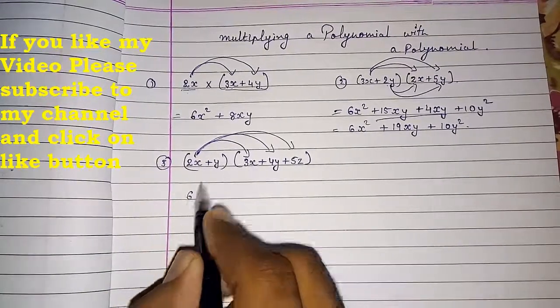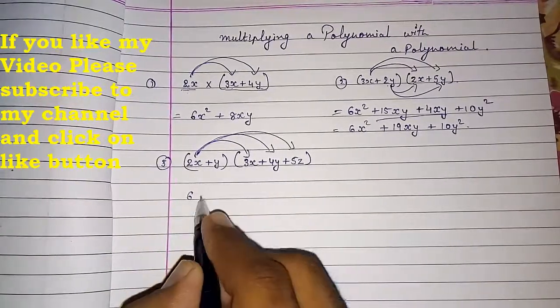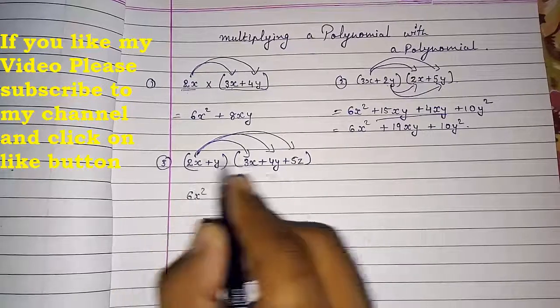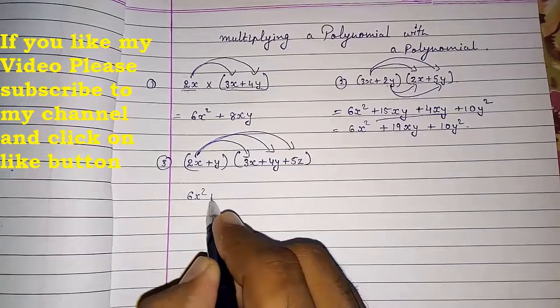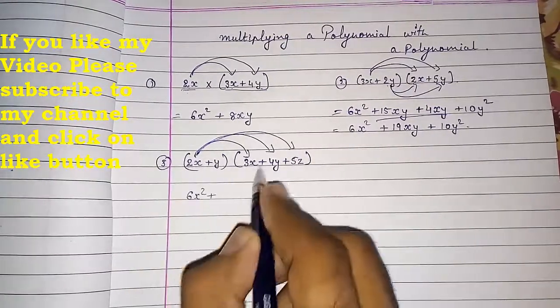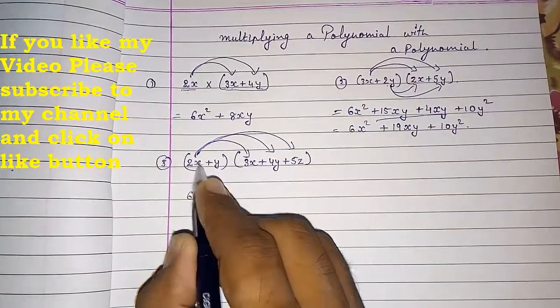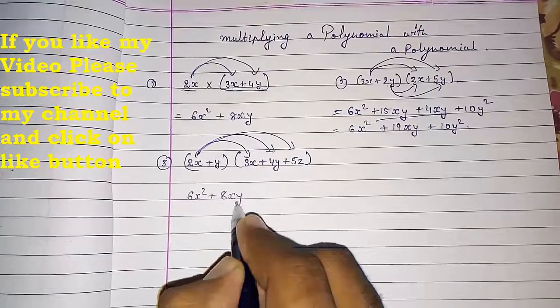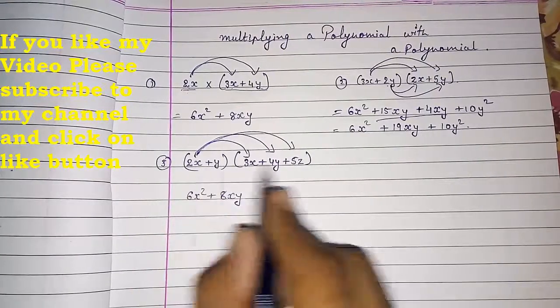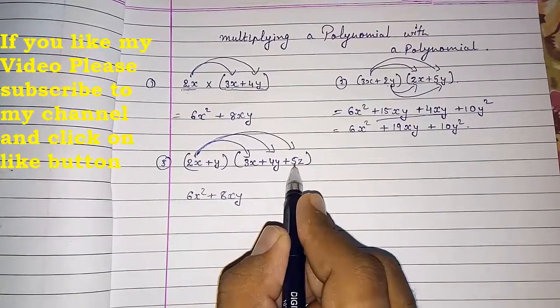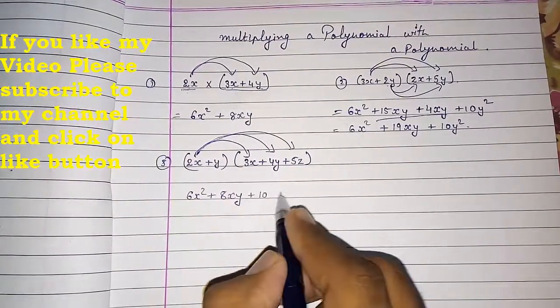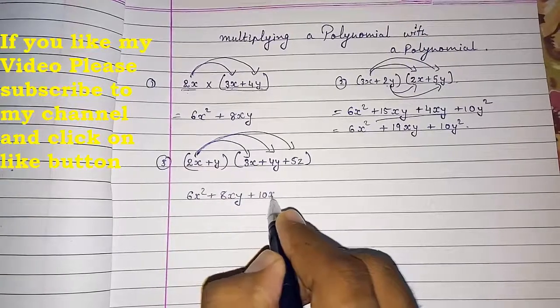First I am multiplying 2x with each term: 2 into 3 is 6, and x into x is x square, giving 6x square. Now 2 into 4 is 8, and x into y is xy, giving 8xy. Now 2 into 5 is 10, and x into z is xz, giving 10xz.